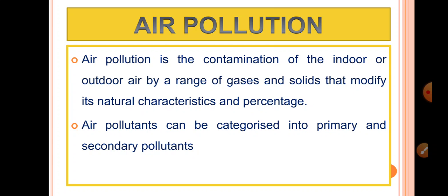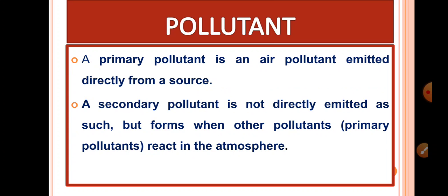There are two types of pollutants: primary pollutants and secondary pollutants. The primary pollutant comes directly from a source.